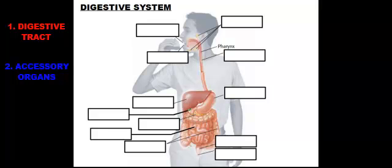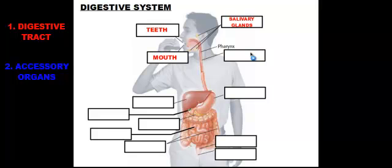The organs of our digestive tract start in the mouth, which includes the teeth and salivary glands. The mouth is where food is broken down both mechanically and chemically, turning it into a soft mass that's easy to pass through. Once we finish chewing, we swallow it and it passes through the pharynx — your throat — and then continues down the muscular tube called the esophagus.